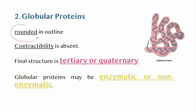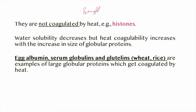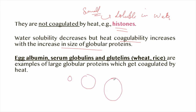Globular proteins are rounded in outline. Contractibility is absent and the final structure is tertiary or quaternary. Globular proteins can be enzymatic or non-enzymatic. Small globular proteins are mostly soluble in water and are not coagulated by heat — for example, histone proteins. Water solubility decreases but heat coagulability increases with the increase in size. Examples of larger globular proteins are egg albumin, serum globulins, and glutelins found in wheat and rice — these get coagulated by heat.